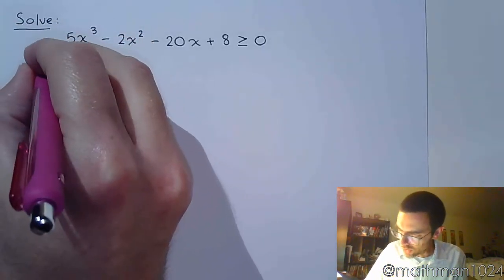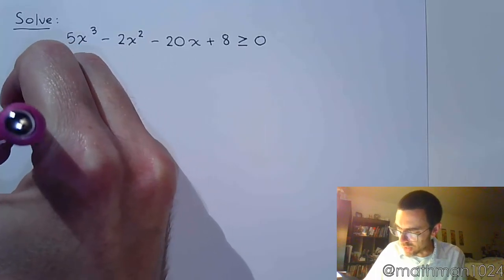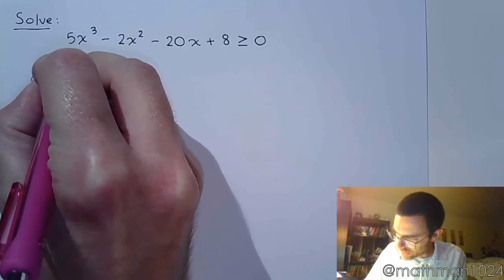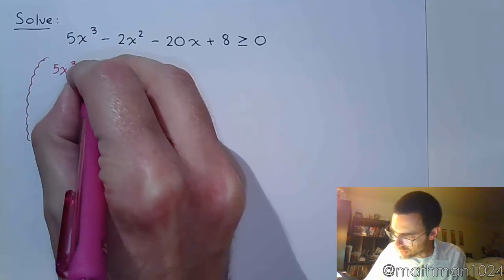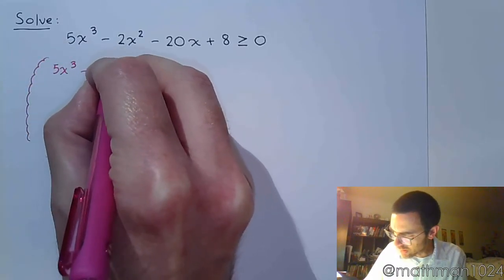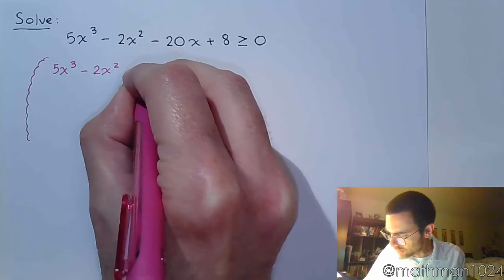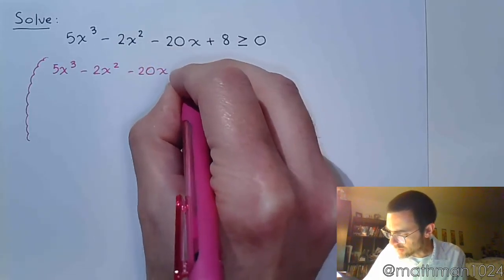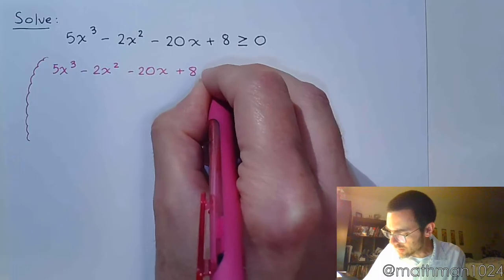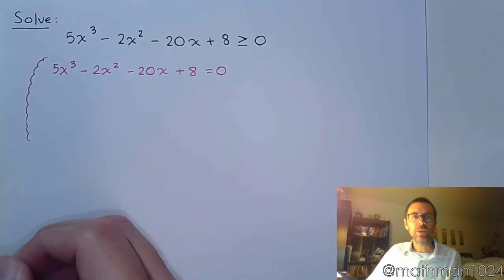So in order for us to do that, let's just rewrite this guy as an equation. So 5x³ - 2x² - 20x + 8 = 0.